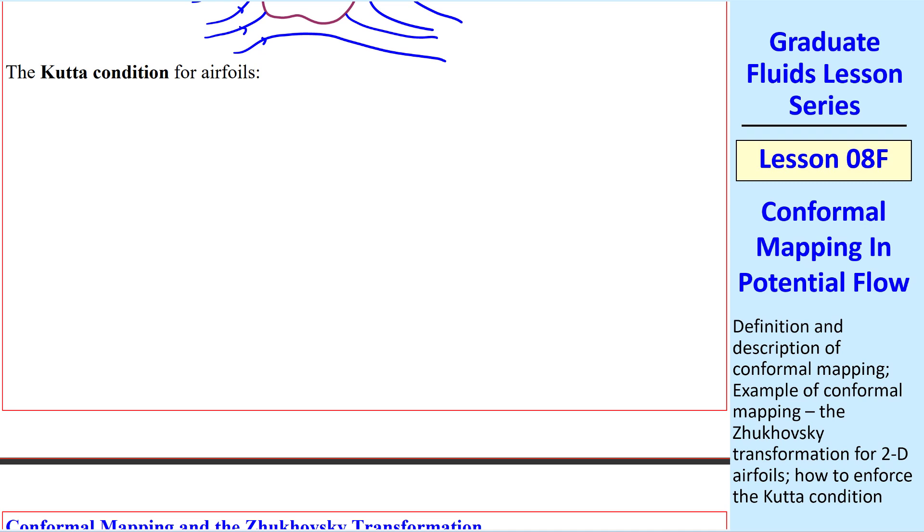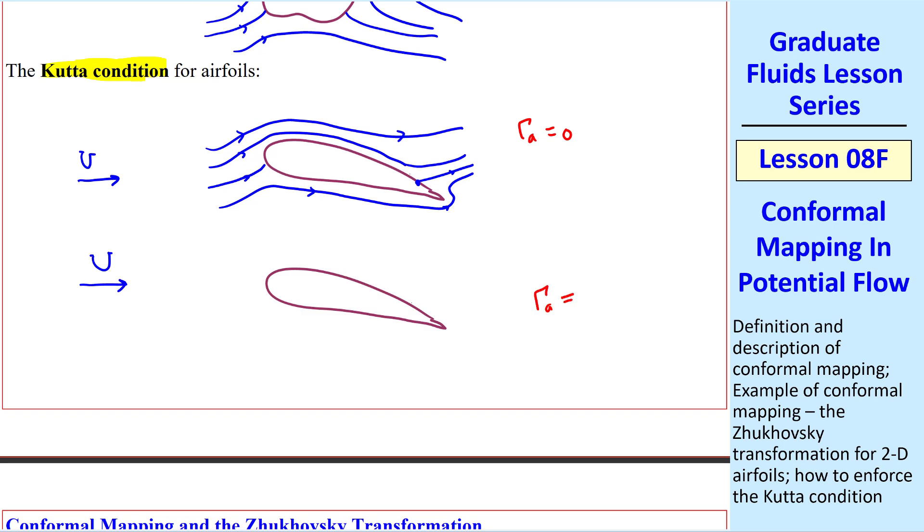Let's apply this to airfoils. If we have some airfoil at an angle of attack in a uniform stream, for the case where gamma A is zero, in other words, there's no circulation, the streamlines would look like this, where the flow has to go around this sharp corner. The speed there is actually infinite, so the location of this stagnation point is not correct. The Kutta condition says that the flow must come smoothly across this trailing edge. So for the case when gamma A is not equal to zero, but rather some positive value, the streamlines look more like what you would expect, with the flow coming smoothly past the trailing edge. At this proper value of gamma A, our lift per unit span is rho U gamma A.